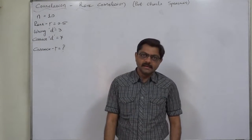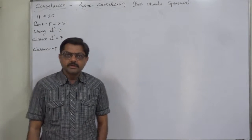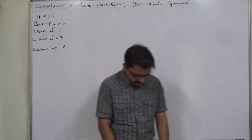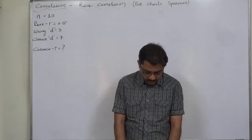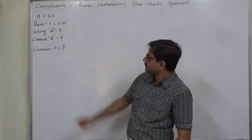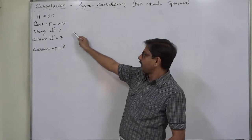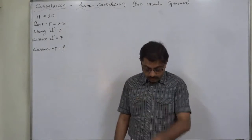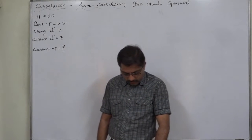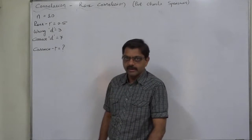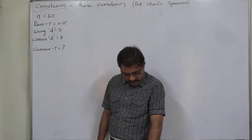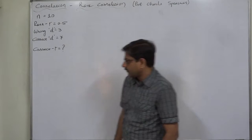Hello and welcome. In this new case on rank correlation, we are going to cover some reverse calculations. The data available is the coefficient of rank correlation between ranks in English and Economics of 10 students, that means n=10, and the coefficient of rank correlation is 0.5. It was later observed that the difference in rank of one student was taken as 3 instead of 7 — so 3 is wrong and 7 is the correct difference. Find out the correct value of r.